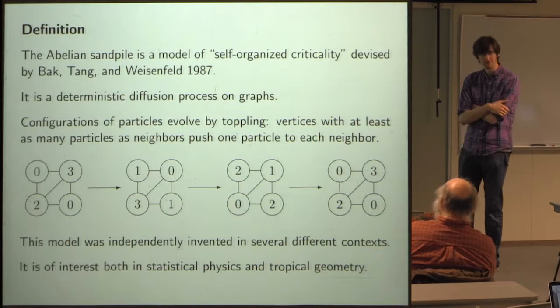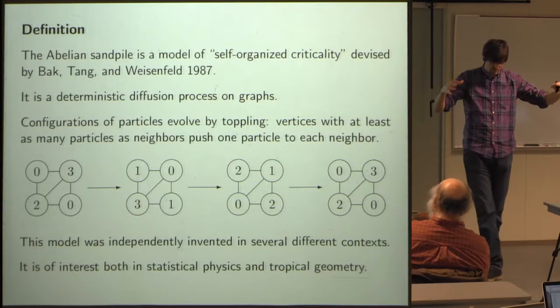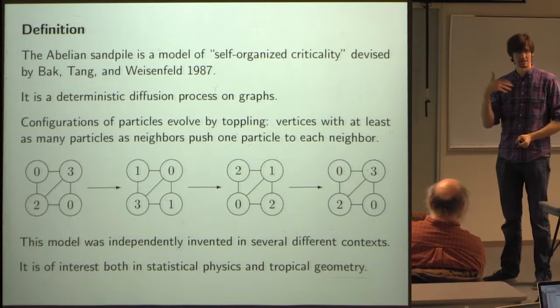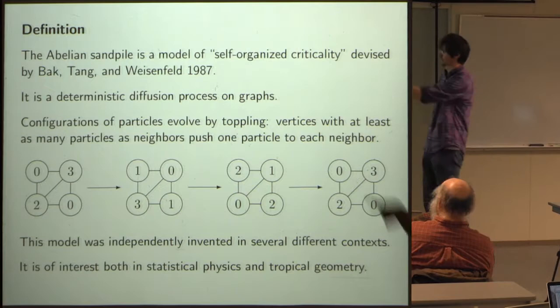It's a deterministic diffusion process on graphs. You have some configuration of particles sitting on the vertices of your graph, and this configuration evolves under a very simple rule: at each step, any vertex that has at least as many particles as it has neighbors sends one particle to each of its neighbors.